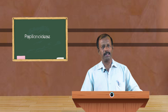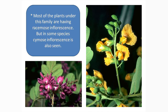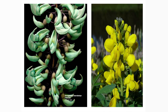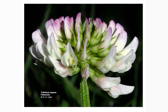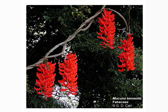Coming to the inflorescence: in Papilionidae, the inflorescence is racemose, and usually it is a very simple raceme. A racemose inflorescence is characterized by the formation of flowers in an acropetalous succession — meaning flowers are produced from the base to the tip. The peduncle keeps on growing indefinitely, with older flowers at the base and younger ones towards the tip, making it a typical simple raceme.